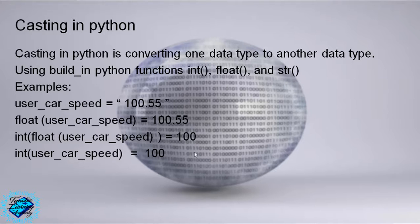Example: user_car_speed = "100.55" (between two double quotes). float(user_car_speed) = 100.55.